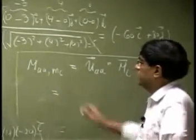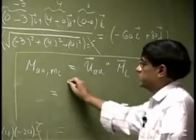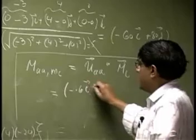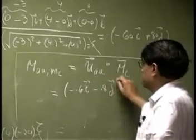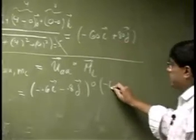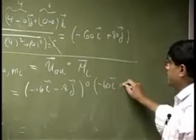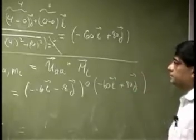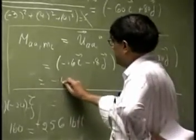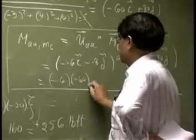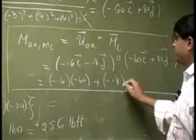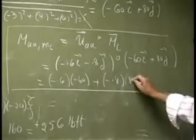We need this dot product. We already know the UAA. That is negative 0.6i, negative 0.8j. Then the dot product with the vector here, that is 60i plus 80j. And this is going to be negative 0.6i, negative 0.8j, this one here, multiplied by 80.